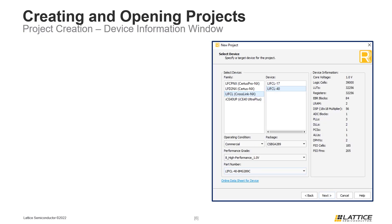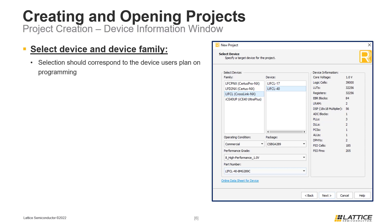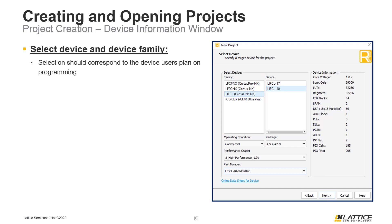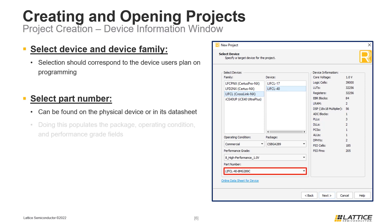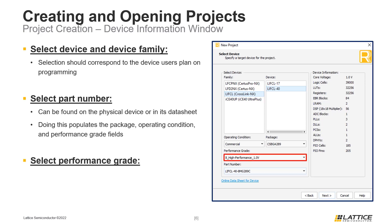The next step is to select the device users plan on programming. First, select a family and then a device. Once the correct device is selected, choose the correct part number, which will populate the package, operating condition, and performance grade fields. It is crucial that the last eight characters of the part number match those on the actual device, which can be found on the chip or in its data sheet. Finally, select the performance grade — either high performance or low power. Click Next once the correct device settings have been selected. The device can also be modified later in Radiant.